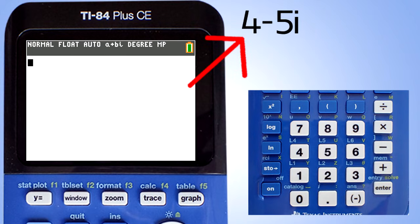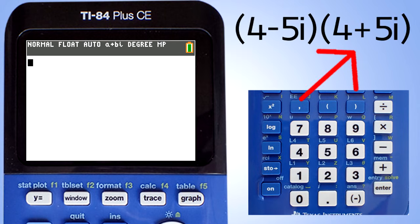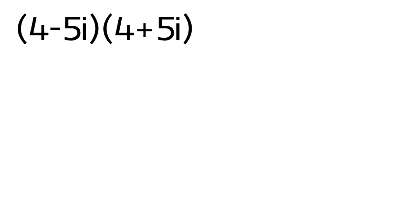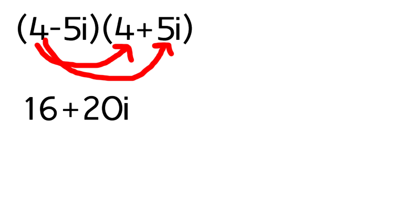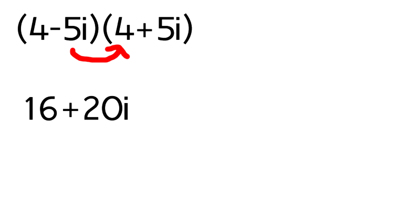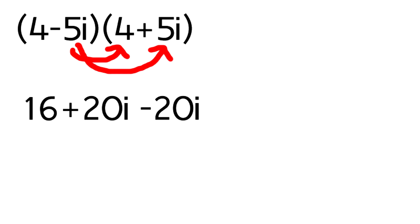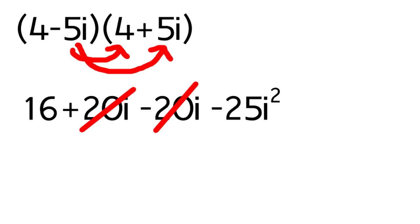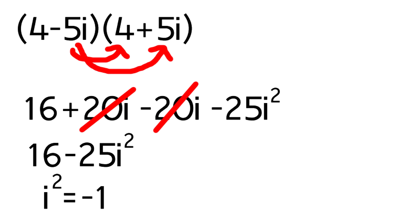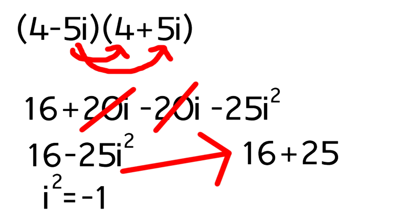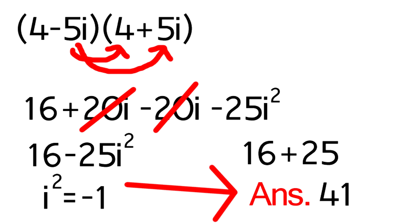Last problem: let's multiply this complex number by its conjugate. The conjugate will be 4 plus 5i. If we do this problem by hand, we distribute the 4: 4 times 4 gives us 16, and 4 times 5i is positive 20i. Distribute the 5i: negative 5i times 4 equals negative 20i, and negative 5i times positive 5i equals negative 25i squared. The positive 20i and negative 20i cancel out. That gives us 16 minus 25i squared. But remember, i squared equals negative 1, giving us 16 plus 25, which is a final answer of positive 41.